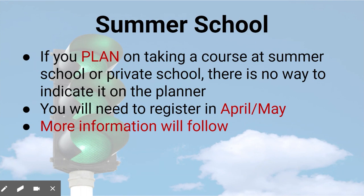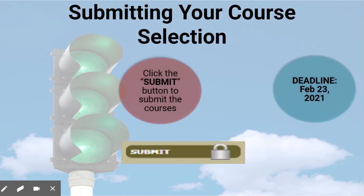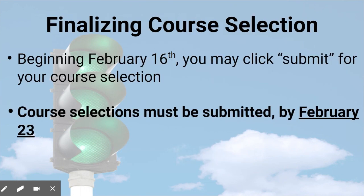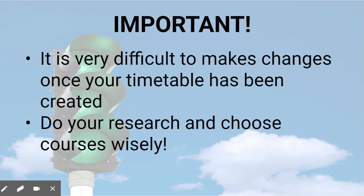If you are planning on taking a summer school course, there is no way of indicating this on My Pathways Planner. Information for summer school registration will be available in the spring. If you are planning on taking a summer school course and you are very sure that you will be taking it, you do not need to put this course on your course selection for next year. When submitting your courses, you need to click the submit button in My Pathways Planner, and the deadline to do that is February 23rd, 2021. You may begin submitting your courses starting February 16th. It is very important that you choose your courses wisely through your research, as it is very difficult to make changes after your timetable has been created.